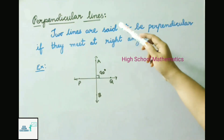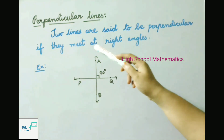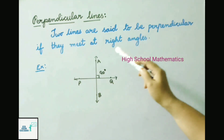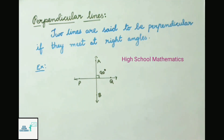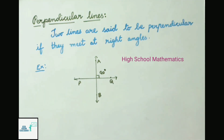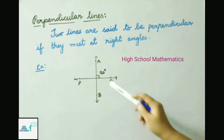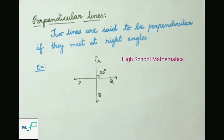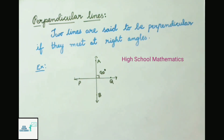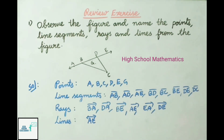Perpendicular lines: two lines are said to be perpendicular if they meet at right angles. Example: line AB and line PQ meet at a point forming an angle of 90 degrees, so AB and PQ are perpendicular lines. Now let us move to the review exercise.